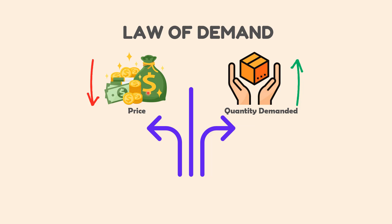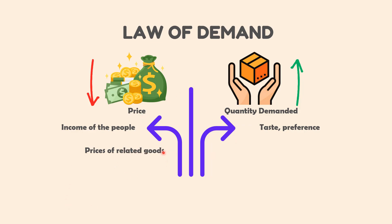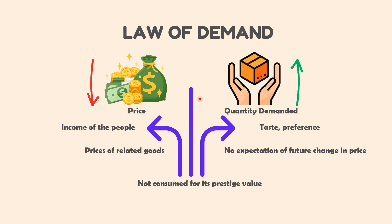There are some assumptions that should be taken care of. First, income of the people remains unchanged. Second, taste, preference, and habits of consumers remain unchanged. Third, prices of related goods, for example substitute and complementary goods, remain unchanged. Fourth, there is no expectation of future change in price of the commodity. And lastly, the commodity in question is not consumed for its prestige value.